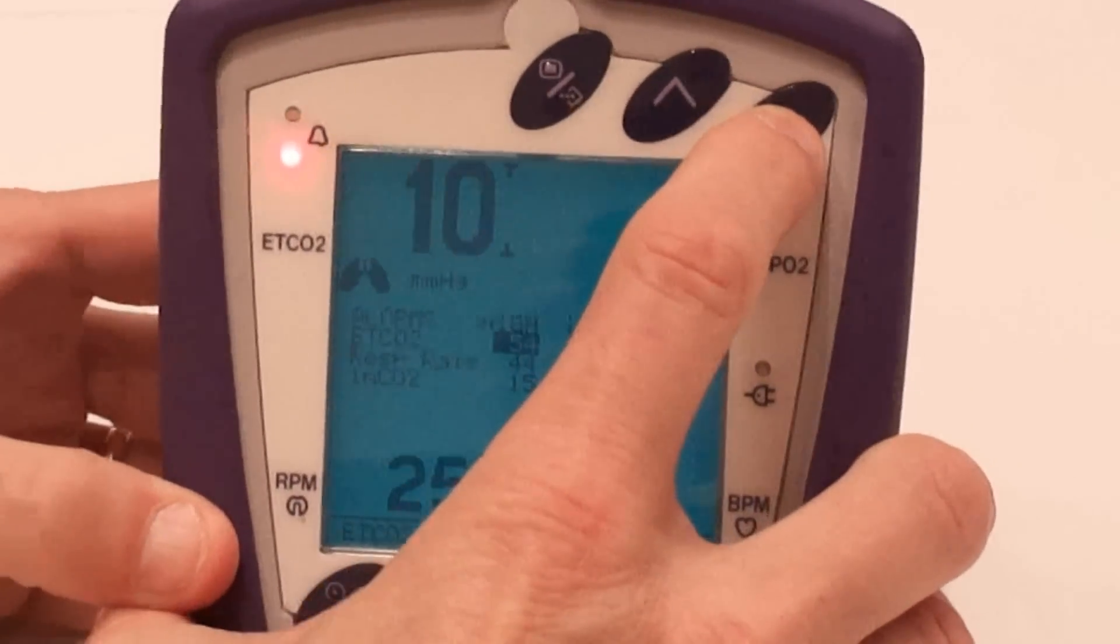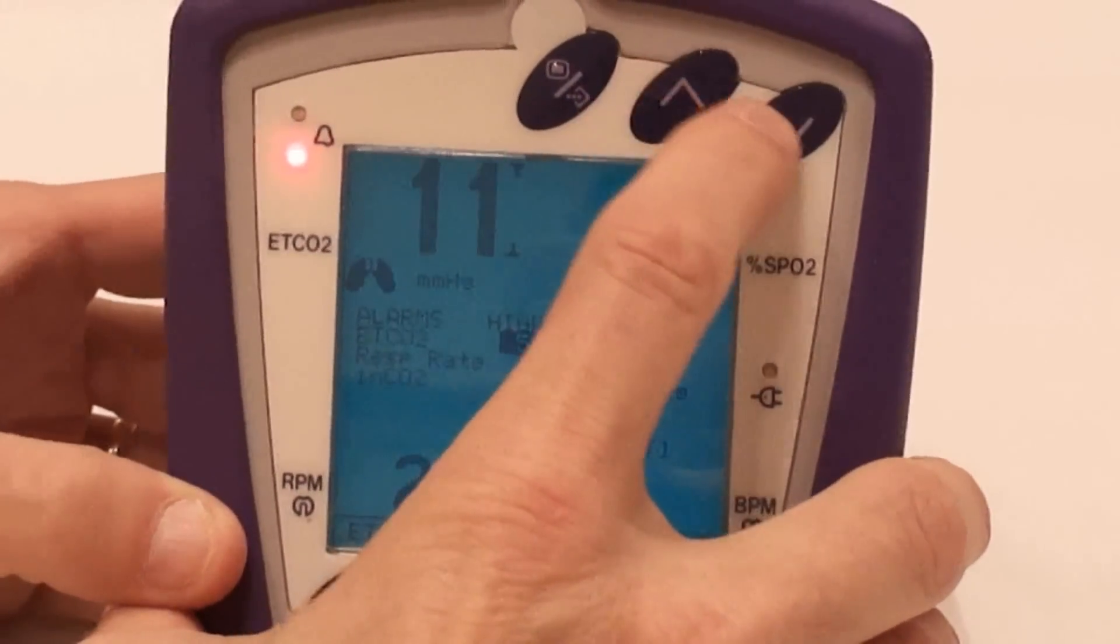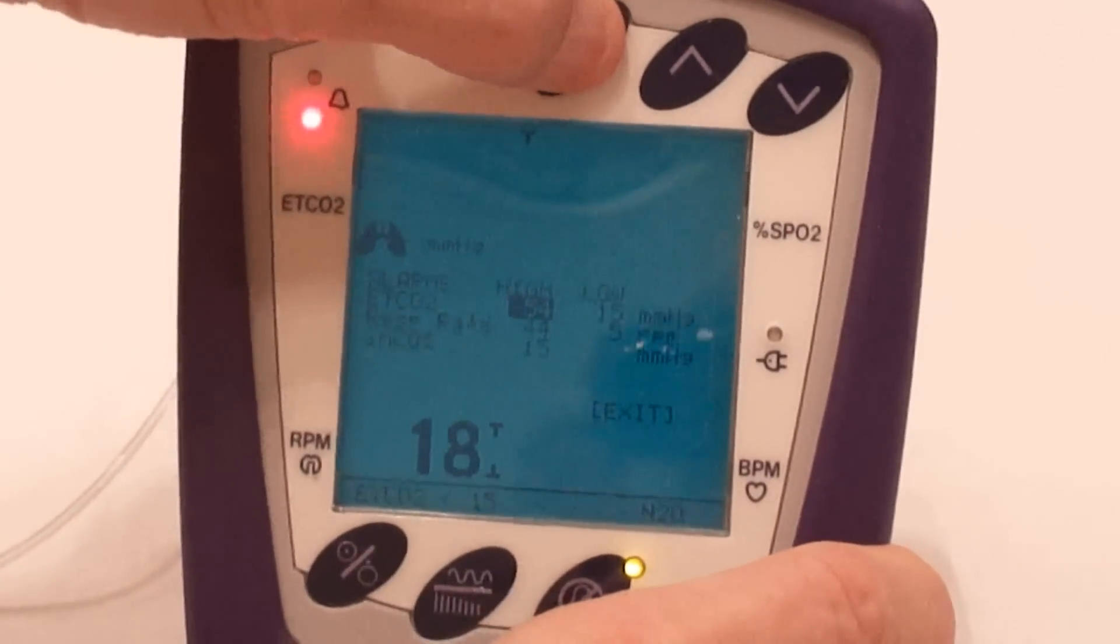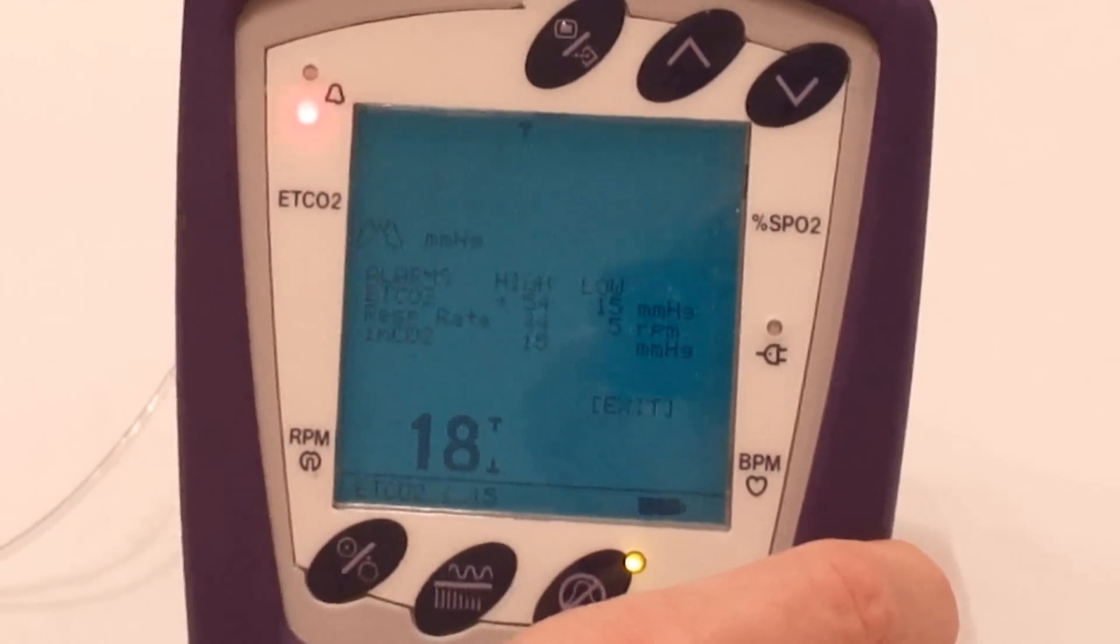Then we can make it go up or down. In this case, we're going to take it down to 54. Then we press the menu button and that locks it in at 54.